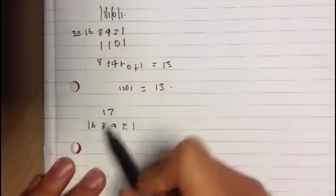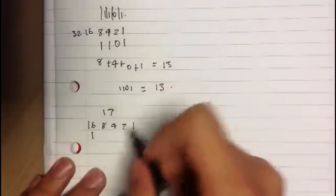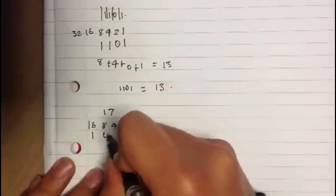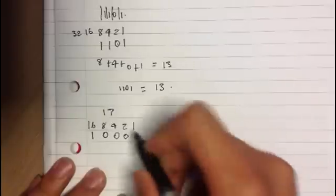So 16 can go into 17. Yep, we have 1 left over, because 17 minus 16 is 1. So 8 doesn't go into 1, 4 doesn't go into 1, 2 doesn't go into 1, but 1 goes into 1.